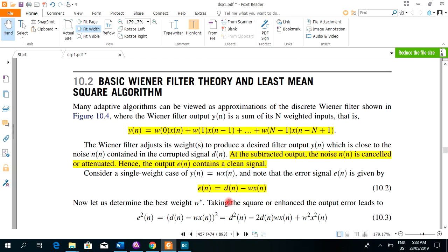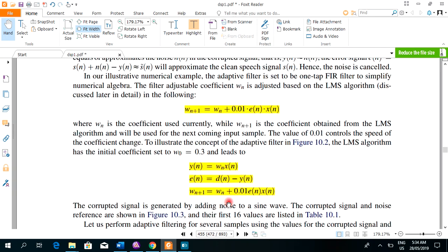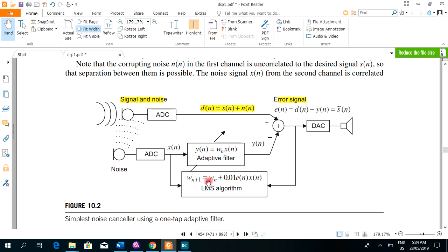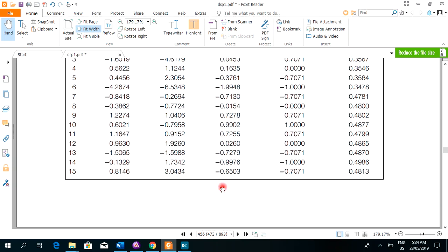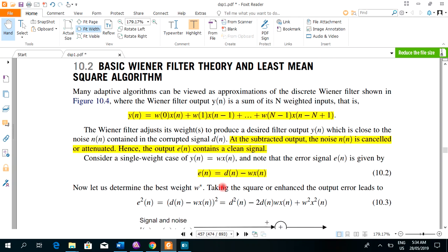The next topic is basic Wiener filter theory and least mean square algorithm. That we have figured out in the figure block diagram. As you can see there, this is mentioned that weight is updated by using LMS algorithm. Many approaches can be used for Wiener filter and LMS is one of them.